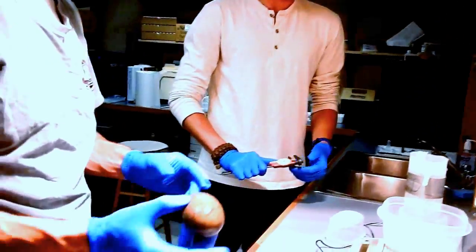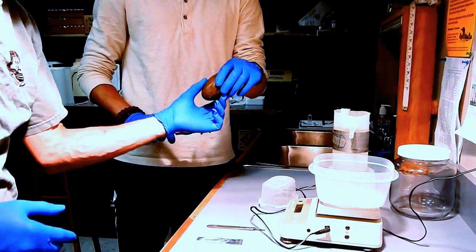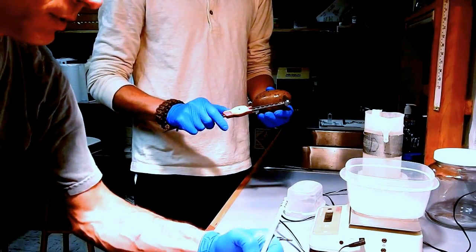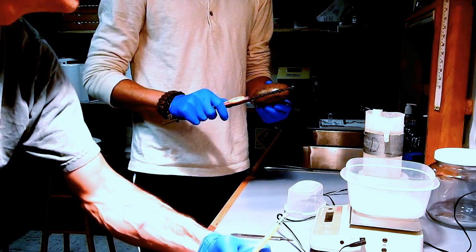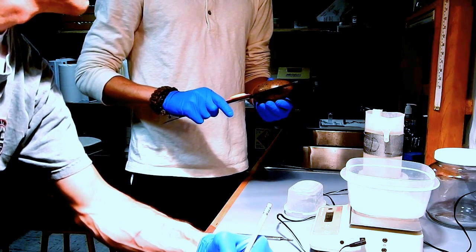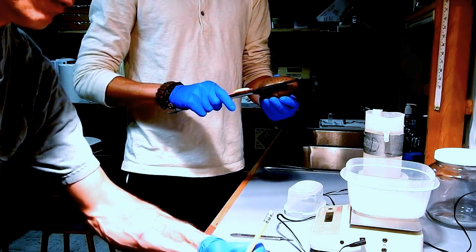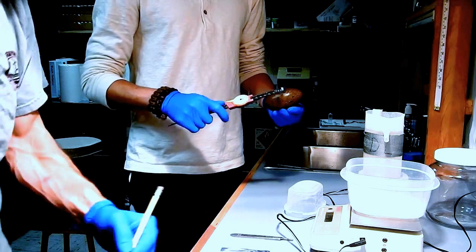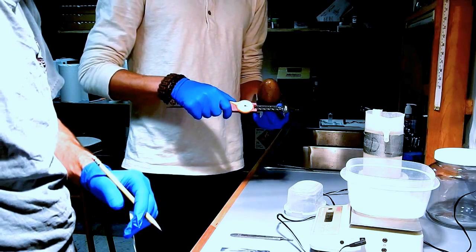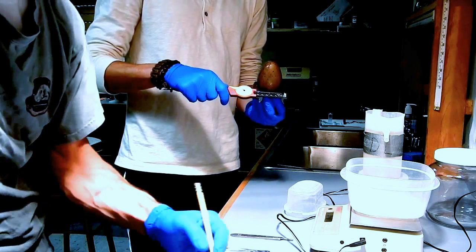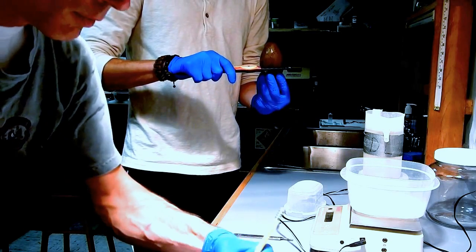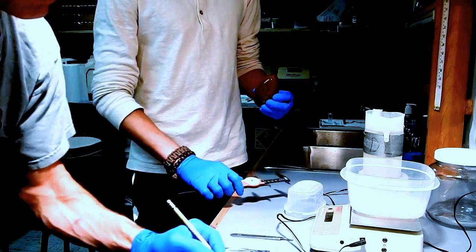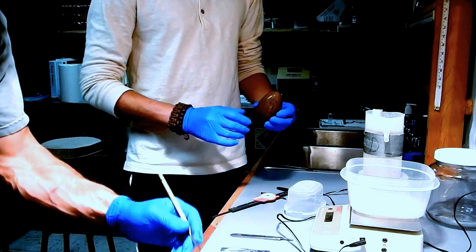So here's the egg. The first thing we usually do is we'll measure it with the calipers. We'll take some length measurements and some width. So first here we'll do the length, which is 97.2 millimeters, and the width is at the widest part, which is 56.6 millimeters.